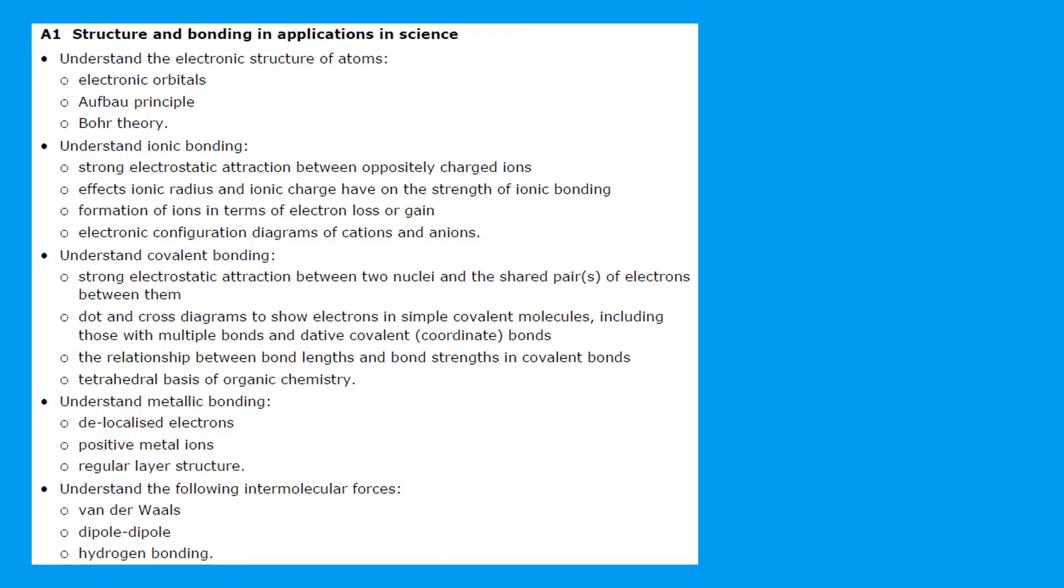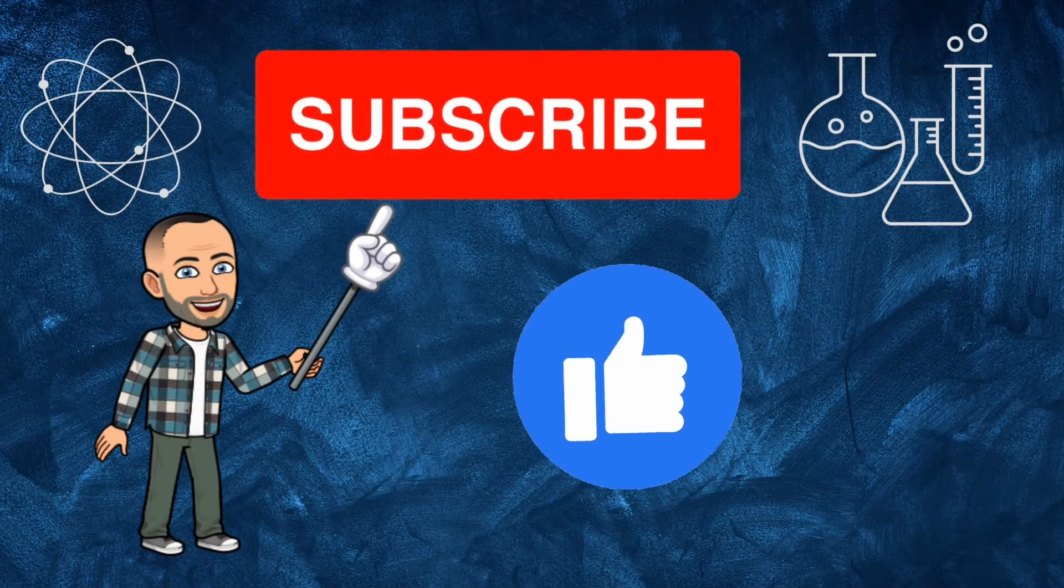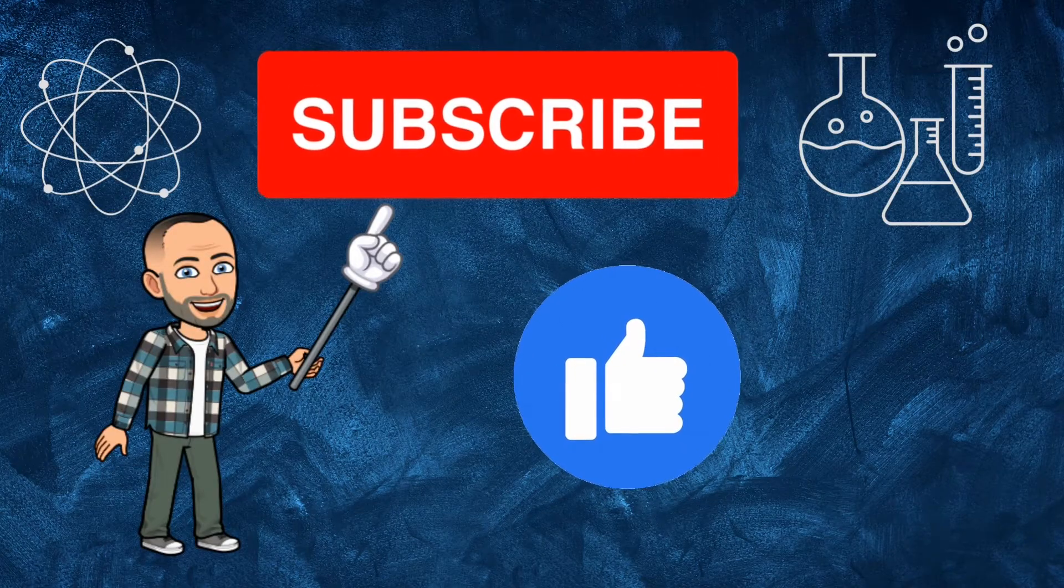Hello there, welcome to my channel on chemistry lessons. This is a BTEC Applied Science Unit 1, Learning Aim A1, and we're going to look at Lesson 1 on covalent bonding. If you haven't already subscribed, why not? Your support does make a real difference and is appreciated.